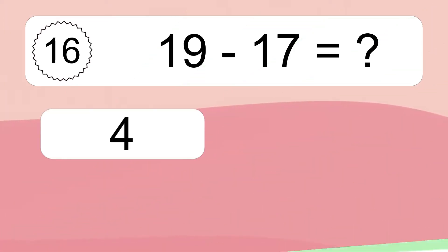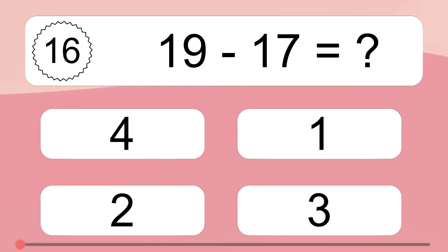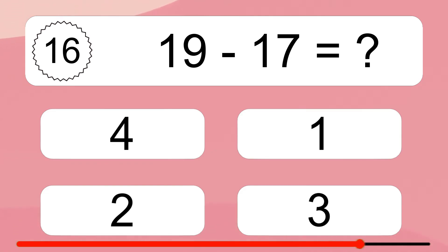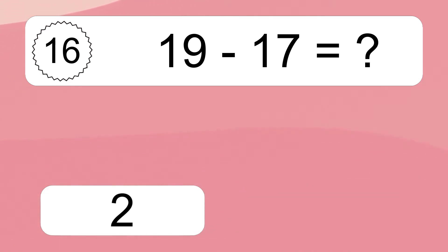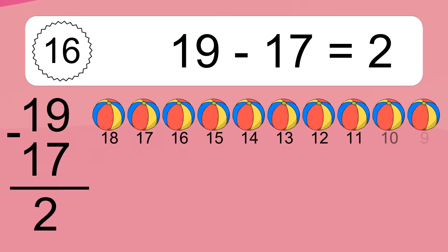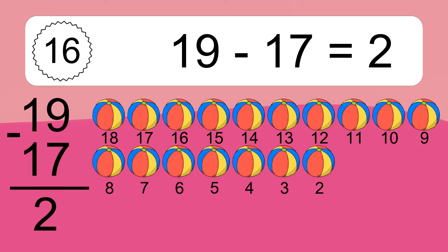19 minus 17 equals what? 19 minus 17 equals 2. Let's count it: 18, 17.